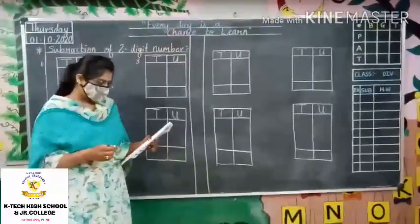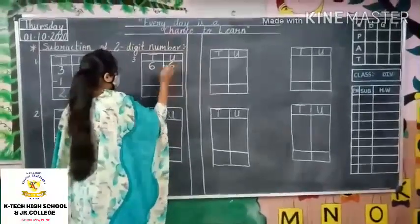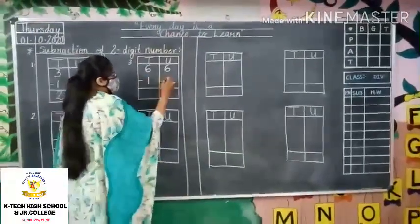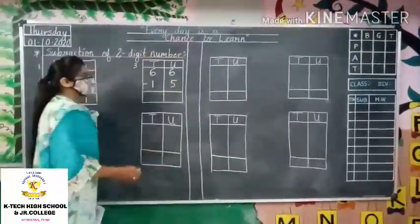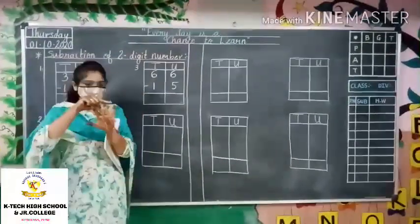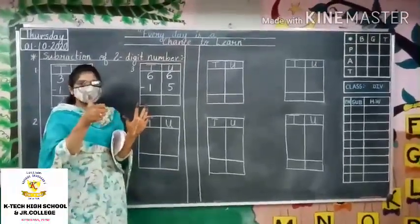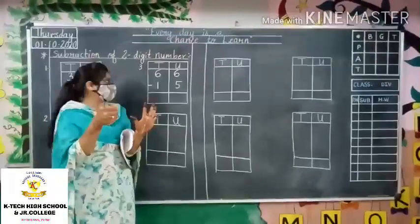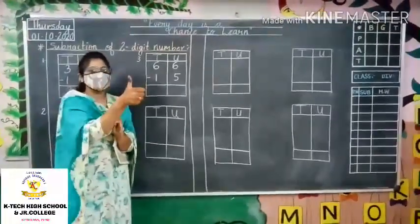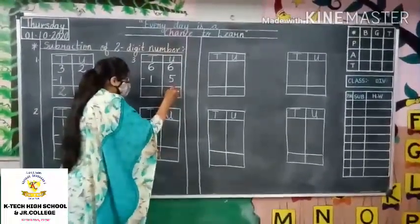Next example: 66 minus 15. Students, put the fingers up. Start with units: 6 minus 5. Put up 6 fingers and remove 5 fingers. How many fingers are remaining? 1. So the answer for units is 1.